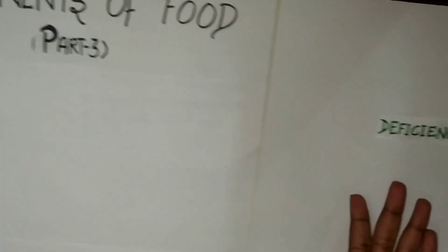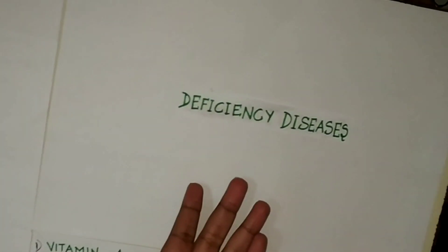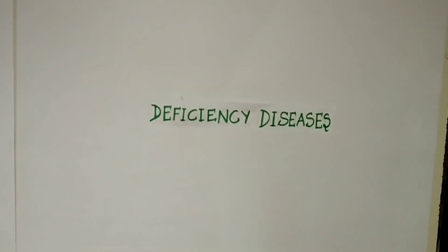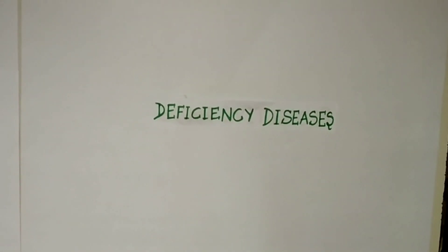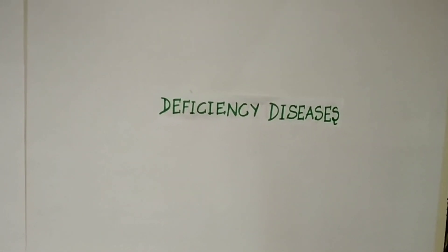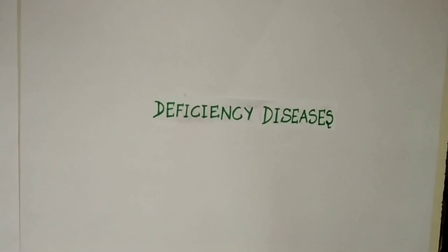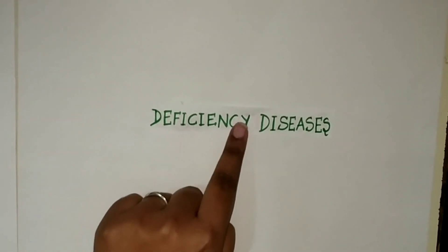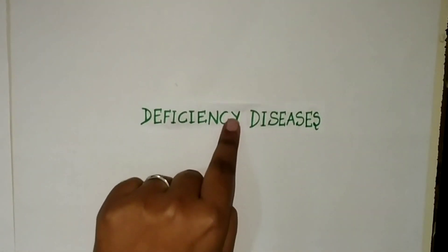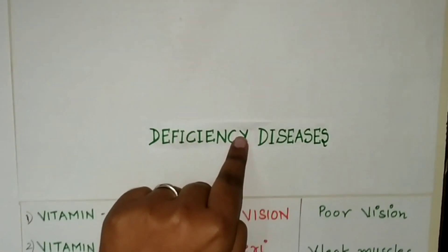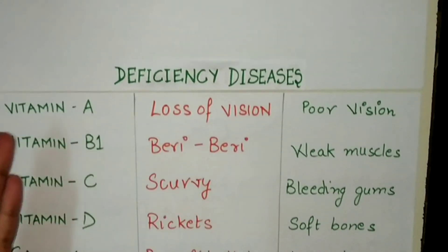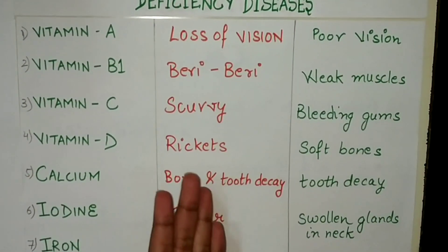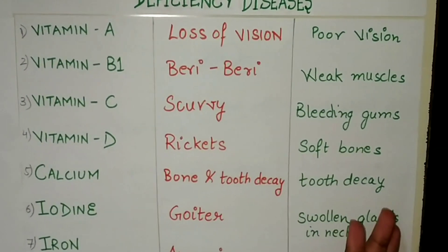Moving on, here are deficiency diseases. Diseases that occur due to lack of nutrients over a long period are called deficiency diseases. Now we will relate these deficiency diseases to the lack of vitamins, the diseases, and the symptoms.